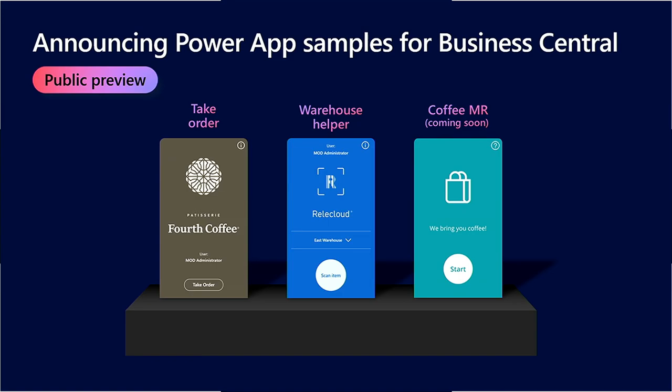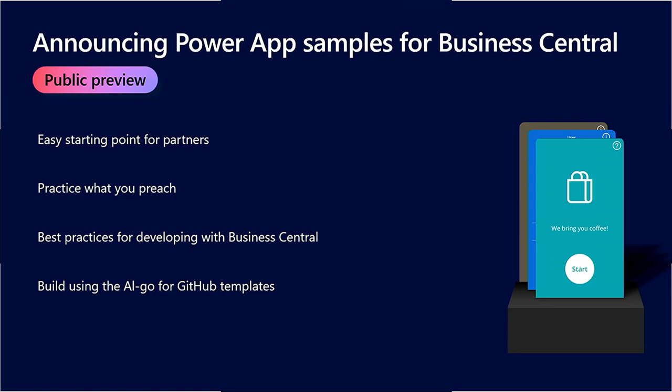As Evgeny mentioned, we're releasing three separate apps: the TakeOrder app, the Warehouse Helper app, and the Coffee MR app. The motivation for building these apps has multiple factors. First, we wanted to make an easy starting point for partners to get started if they want to build Power Apps with Business Central. We also wanted to dogfood the experience and see what roadblocks partners hit — and we took all that learning and put it into the apps, incorporating best practices. They use the new AL Go for GitHub PTE template.